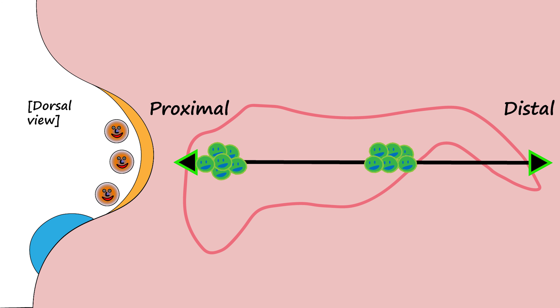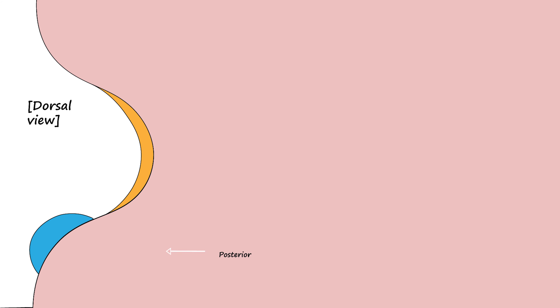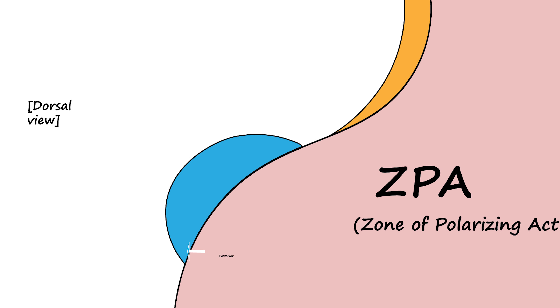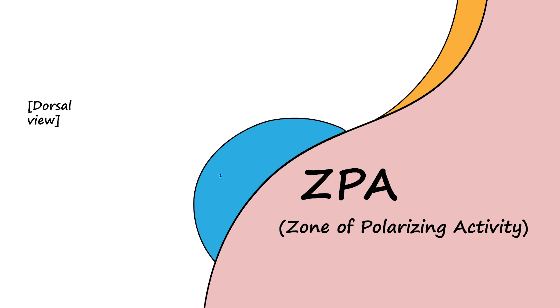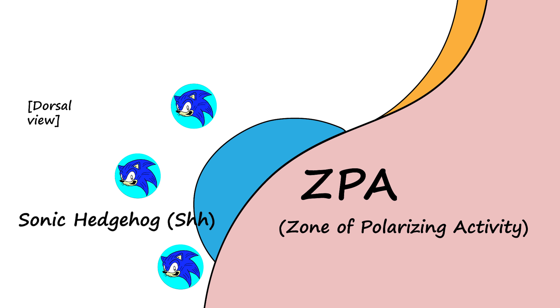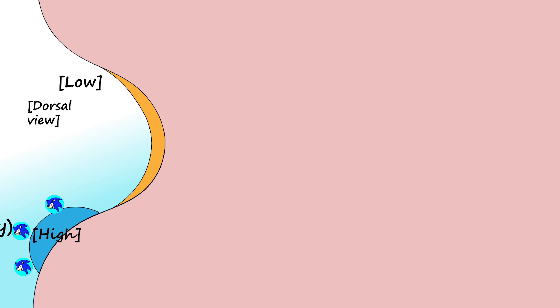Next, considering anterior-posterior: a region located on the posterior of the limb bud known as the ZPA produces a molecule called Sonic Hedgehog on a concentration gradient.